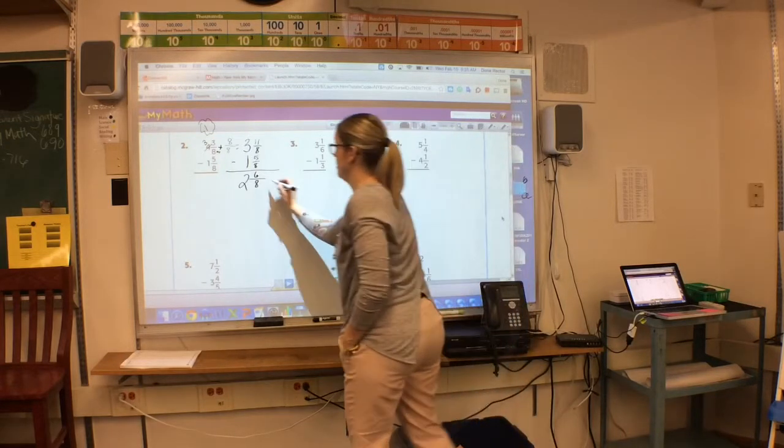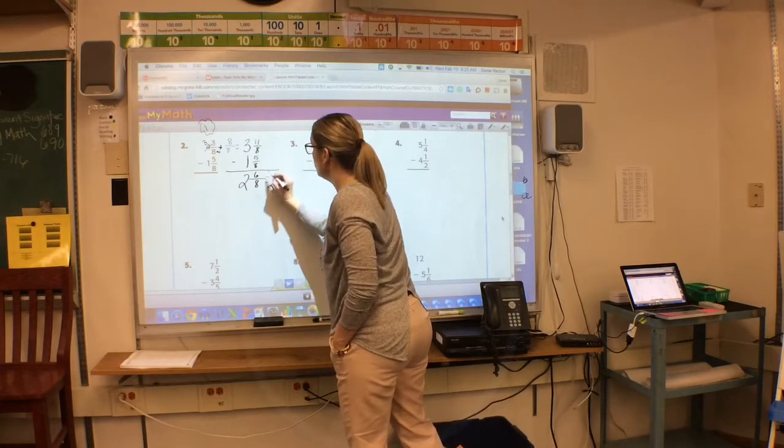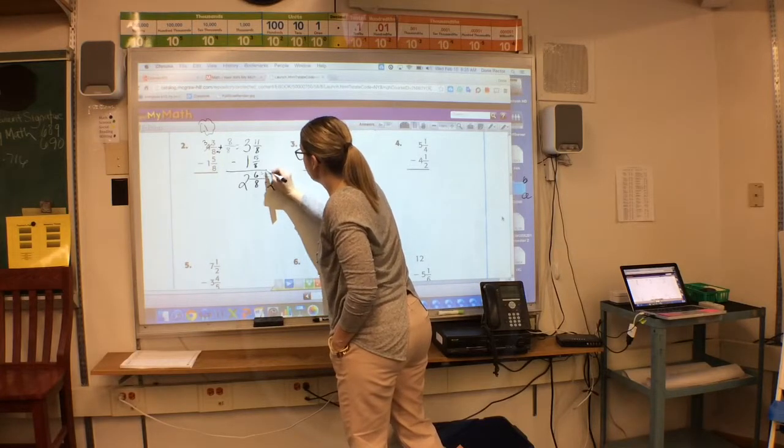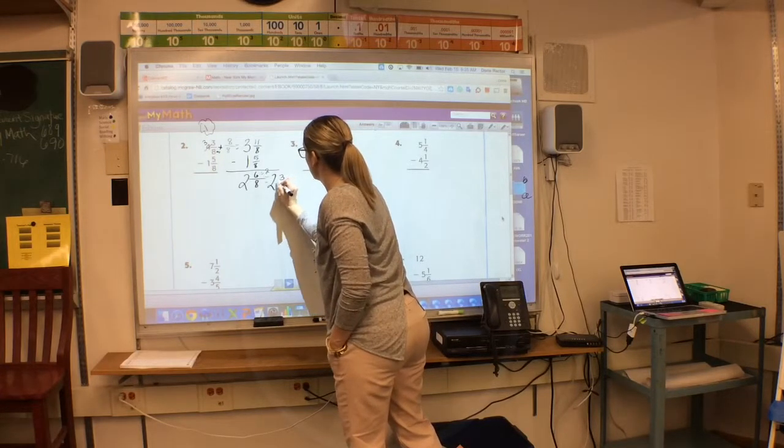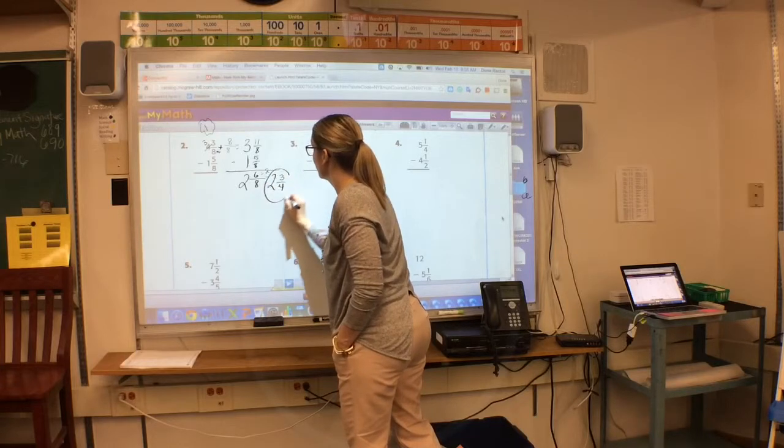I'm still not done. I'm going to leave my 2. I'm going to divide by 2, and I get 3 fourths. 2 and 3 fourths. I'm done.